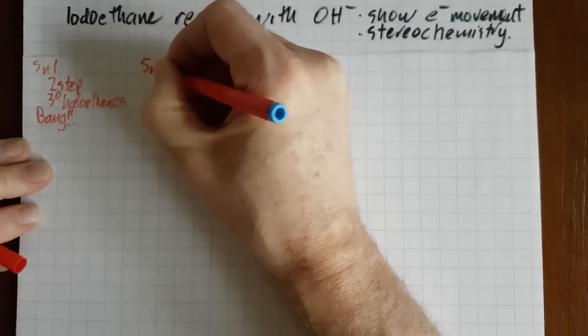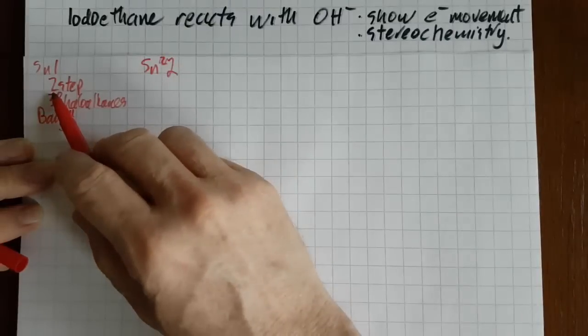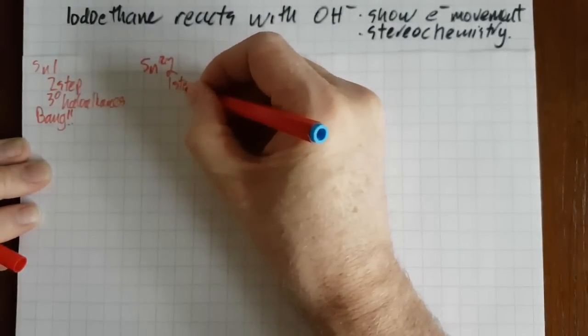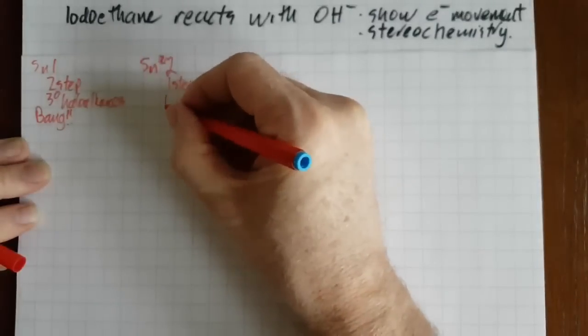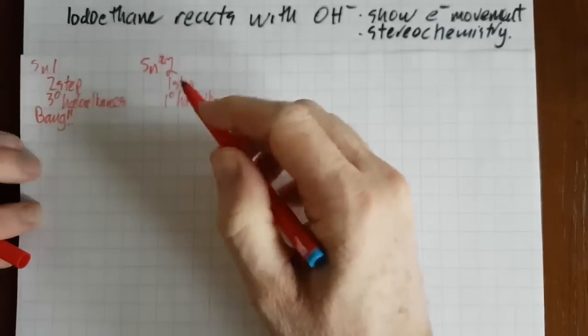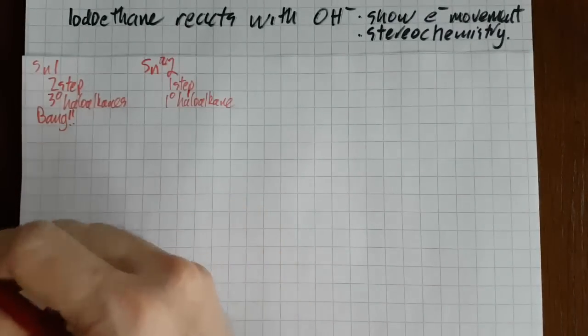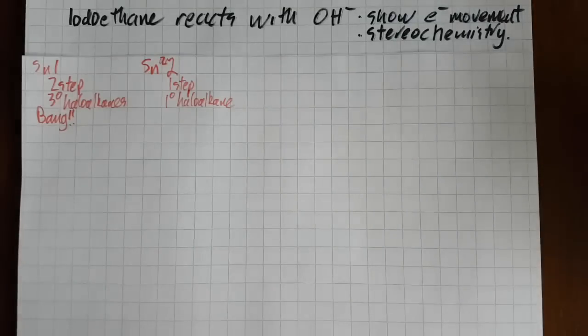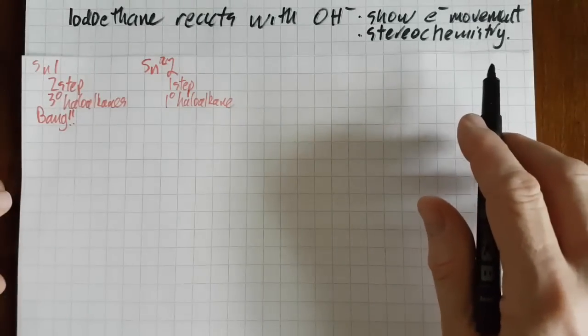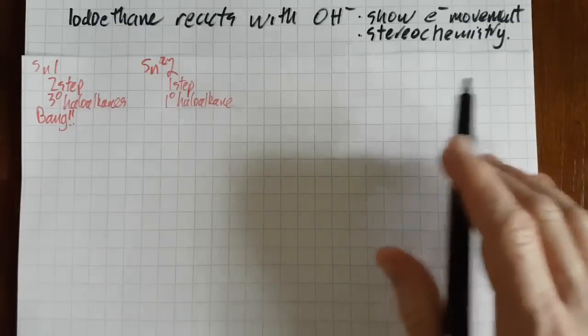So that means we must be dealing with SN2. SN2 which would be the opposite, just one step, a primary haloalkane and it's slow. So SN2 is just one step. Now you do need to show the intermediary step, but it is a one-step mechanism. Alright, so I'm going to do it first without the stereochemistry and that will get me three of the four points, and then I'll use models to explain the stereochemistry.